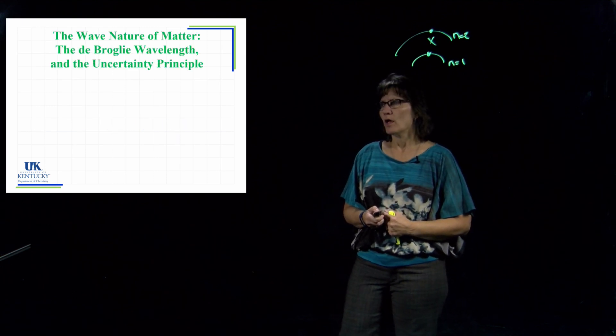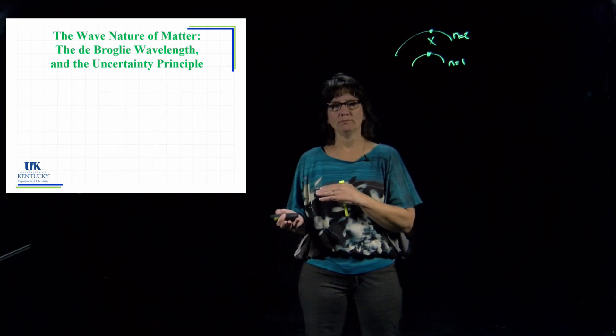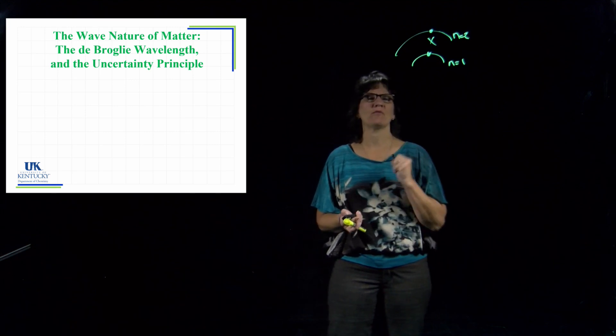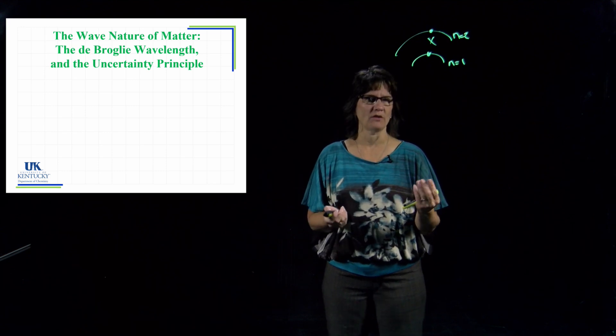This leads us to what's called the dual nature of matter, so the wave nature of matter. This was a new concept—we knew that electrons were particles, we can measure a mass for them and a charge for them, we knew they were particles. But de Broglie was the one who came along and said maybe they also have a wave nature and that there would be a wavelength associated with it.